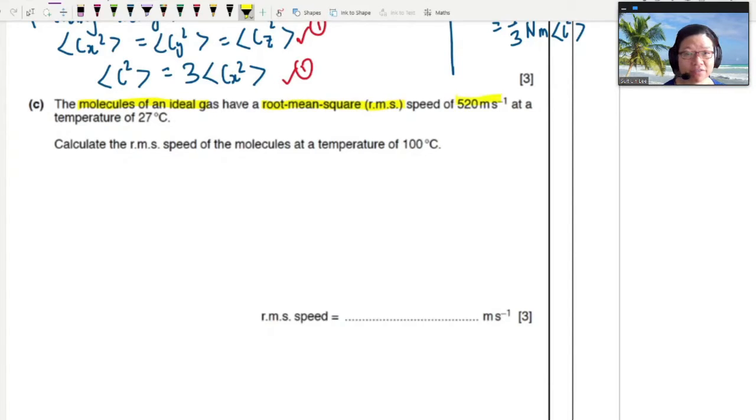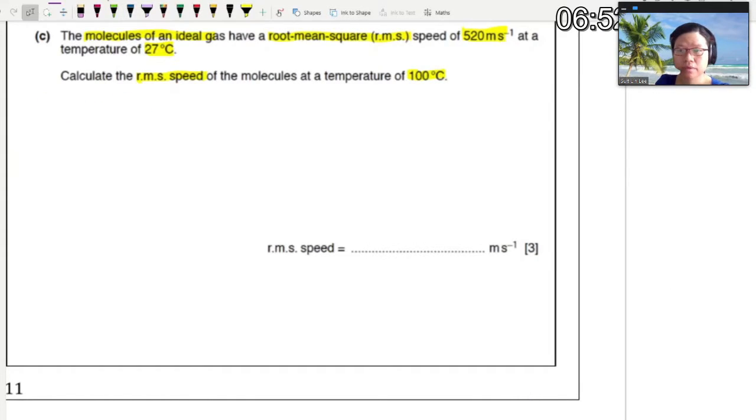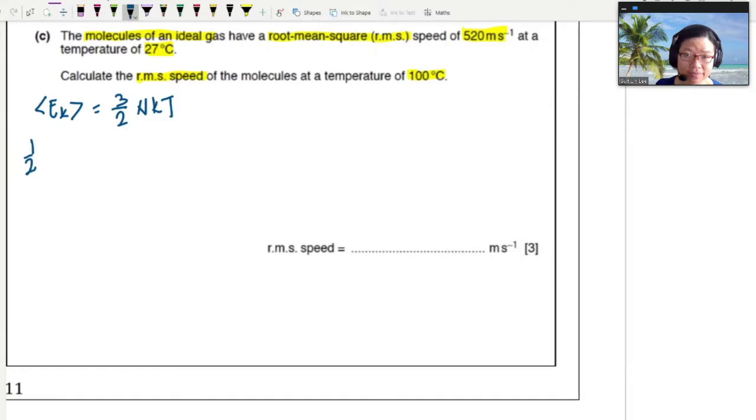Molecules of ideal gas have RMS 520 meter per second at a temperature of 27 degrees Celsius. What is the root mean square speed of the molecules at 100 degrees Celsius? So this one is very straightforward. We expect the particle to travel faster. But first, we need to think about what relationship relates the mean square speed and the temperature. So the answer to that would be that you can start off from kinetic energy. So kinetic energy will be equal to 3 over 2 NKT. So recall this equation.